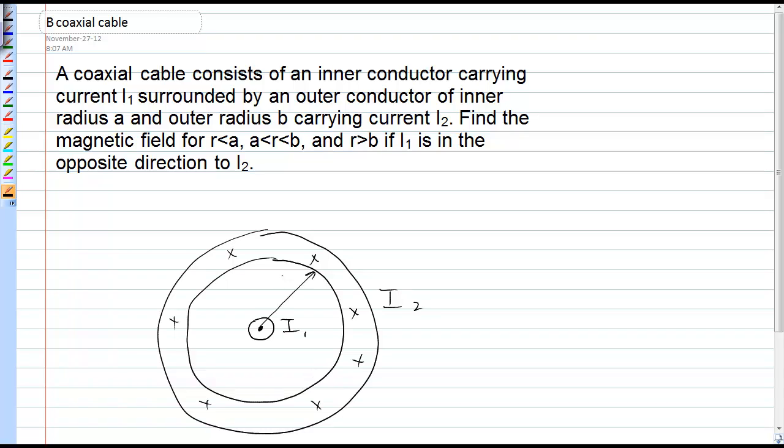The inner radius of the outer conductor is a and the outer radius is b. So we're trying to find the magnetic field both in the gap and inside the conductor as well as outside the whole coaxial cable.